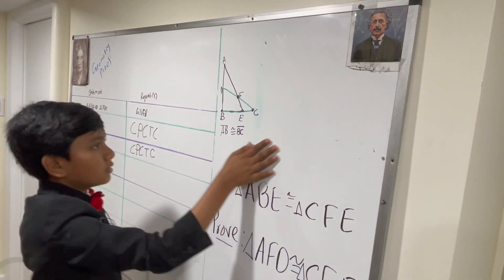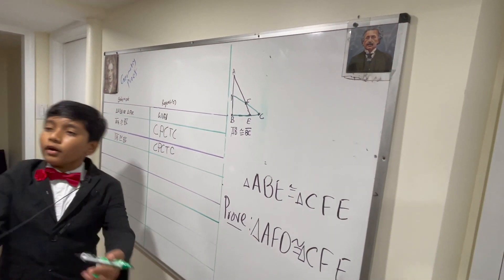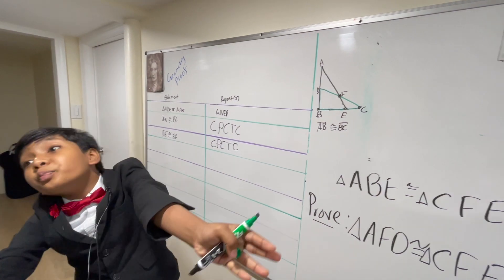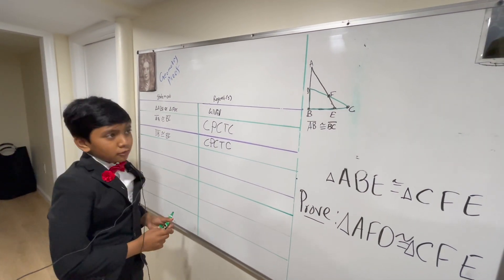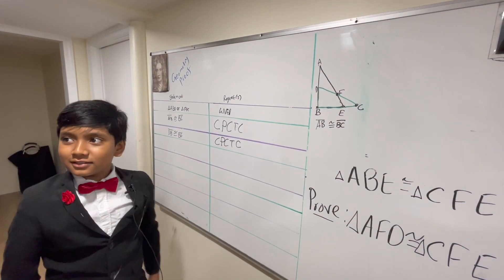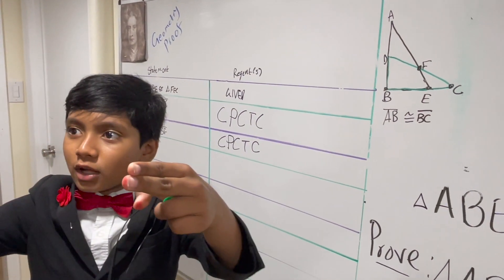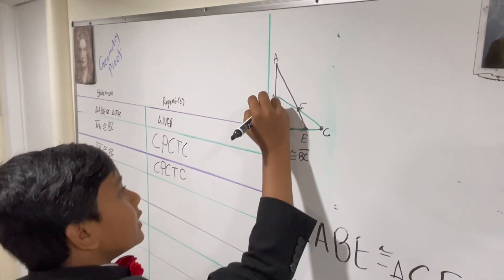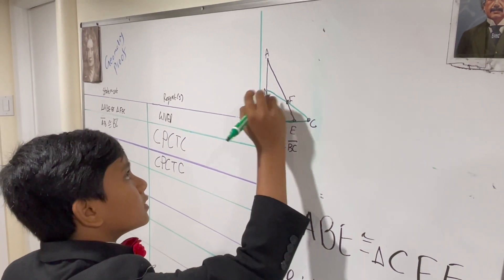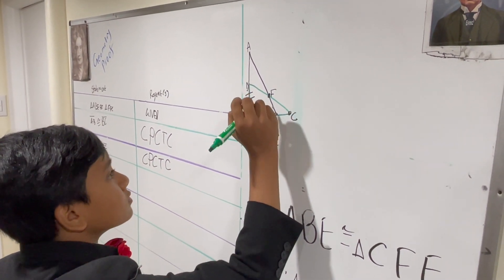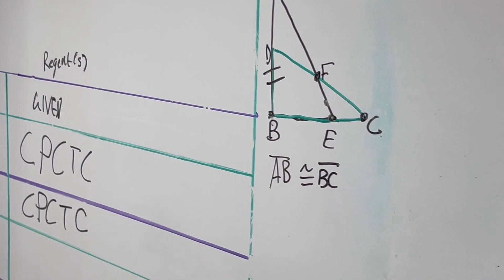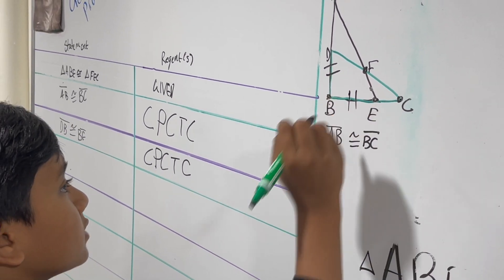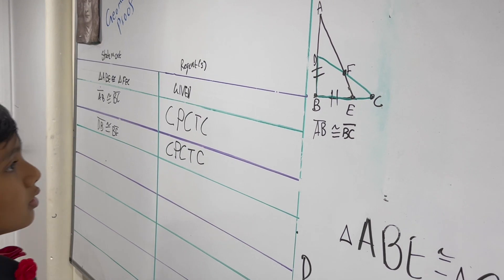A circle inside a circle — that's called a concentric circle. Do not speak. So now we know that DB corresponds to BE.